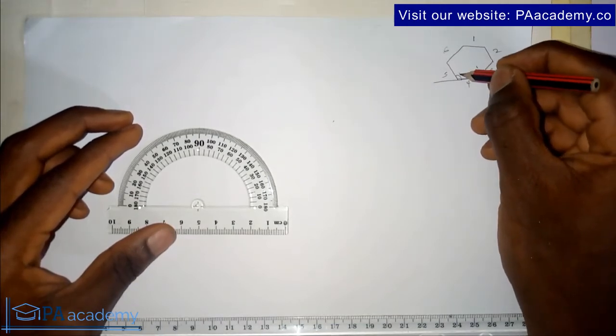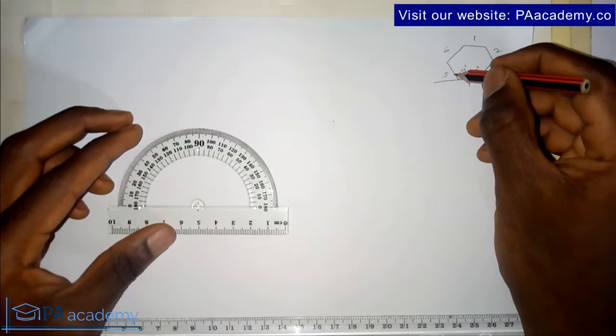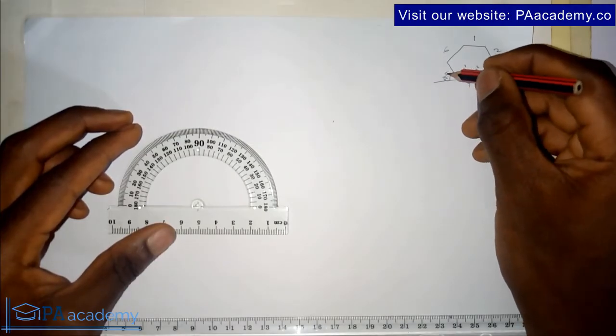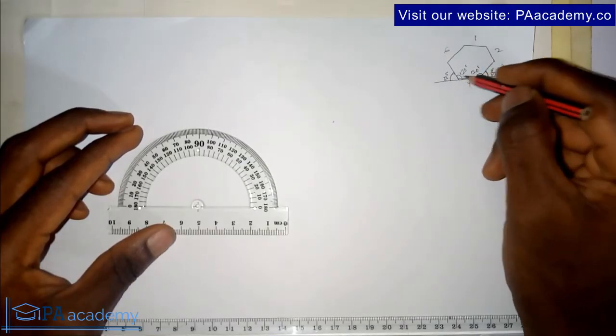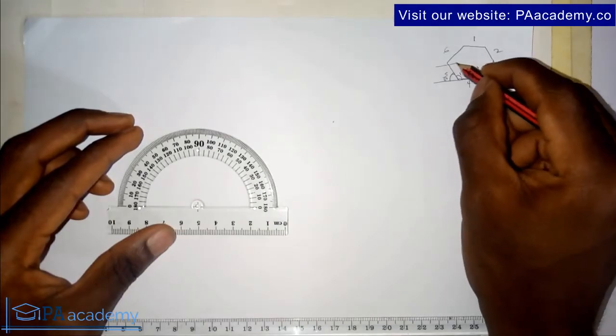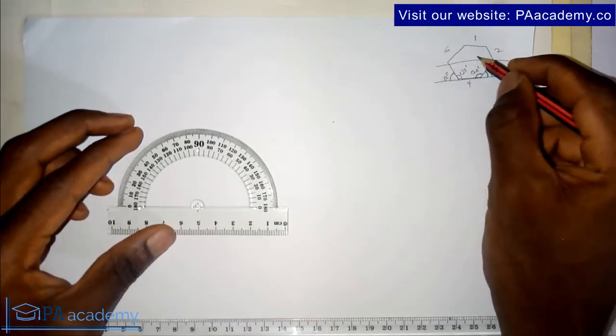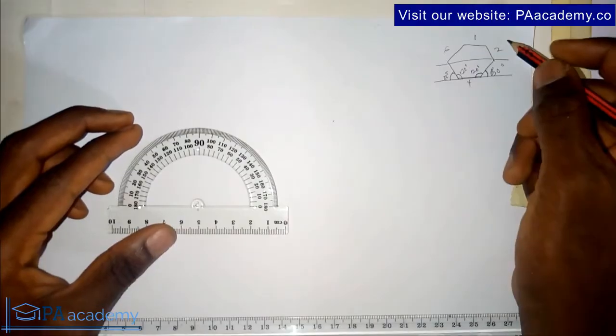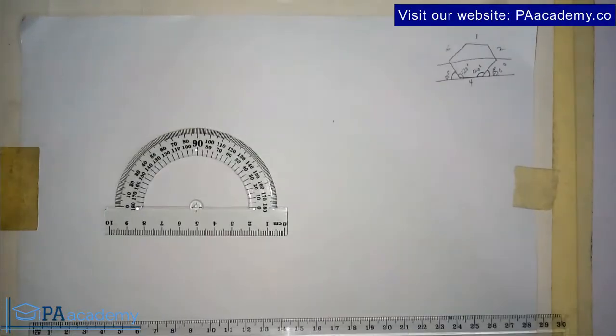The internal angle here we make it 120 degrees, or the one outside we make it 60. We'll do the same down here. And while at this side also we are going to apply the same: either we make one 120 or 60 degrees.